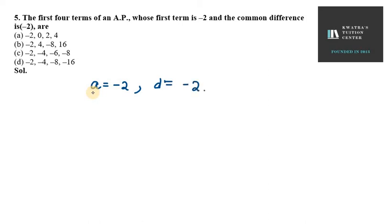The first term is minus 2. Now if you want to find the next term, you need to add a plus d. So a plus d is minus 2 plus minus 2, which equals minus 4. The second term will be minus 4.